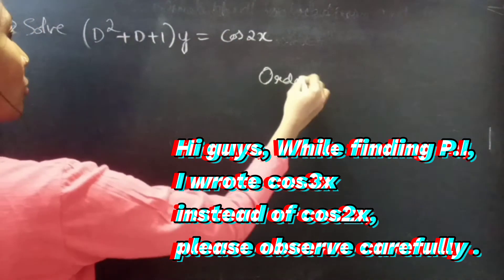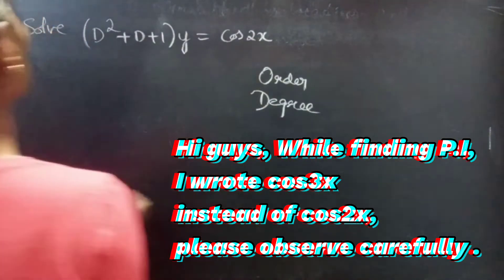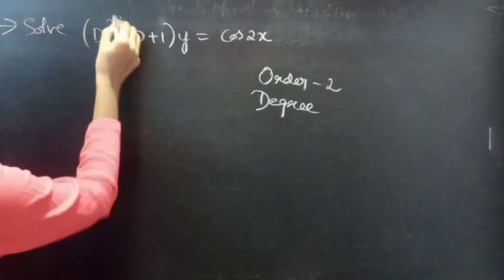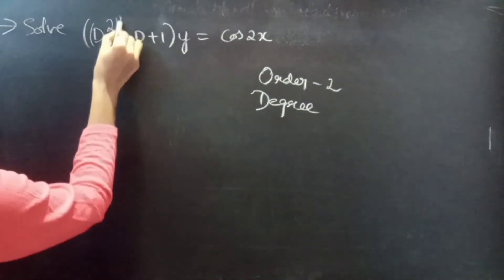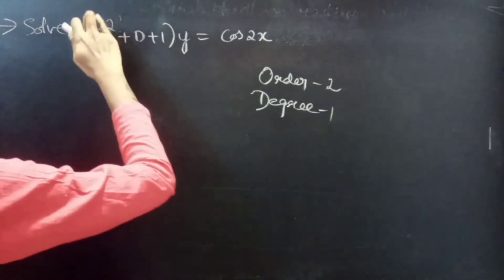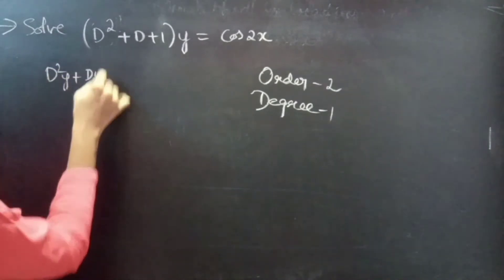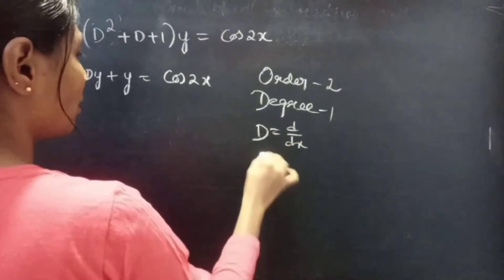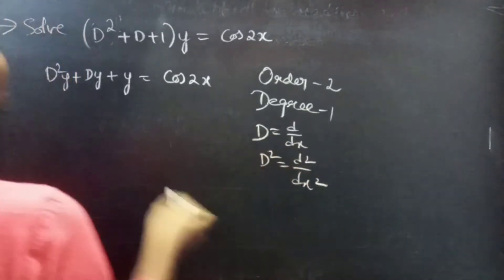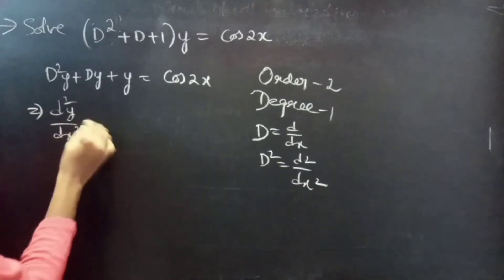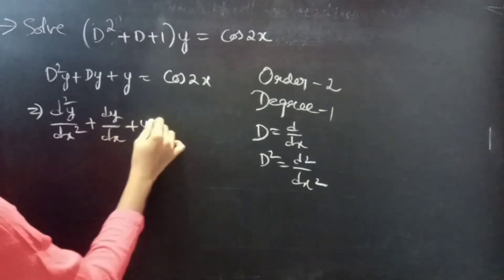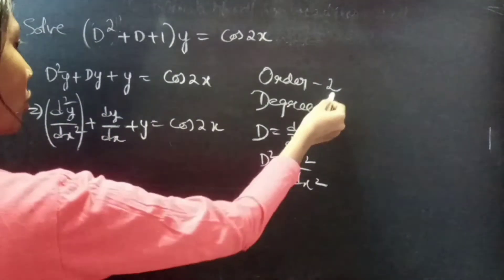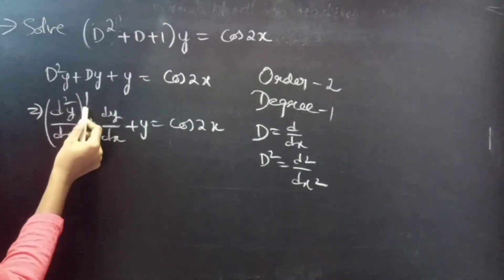Firstly let's find the order and degree of the given equation. Identify the highest derivative — here D² is the highest derivative, so our order will be 2. The highest power of the highest derivative is our degree, so here degree is 1. We can write the equation as d²y/dx² + dy/dx + y = cos(2x), where D = d/dx and D² = d²/dx².